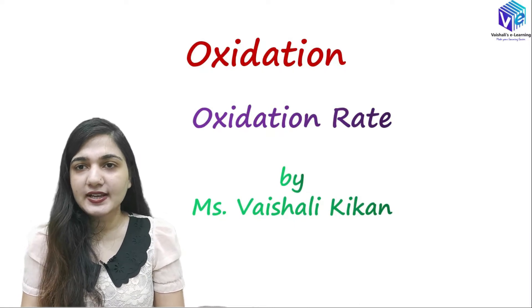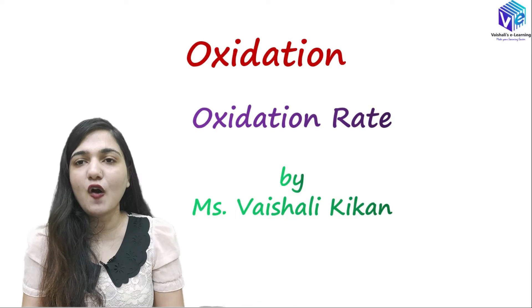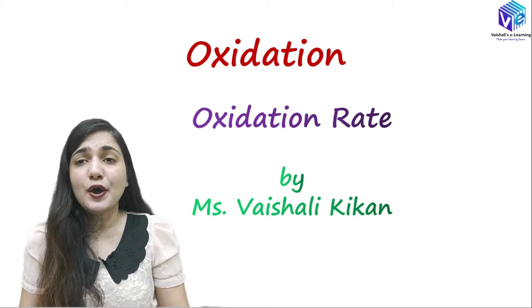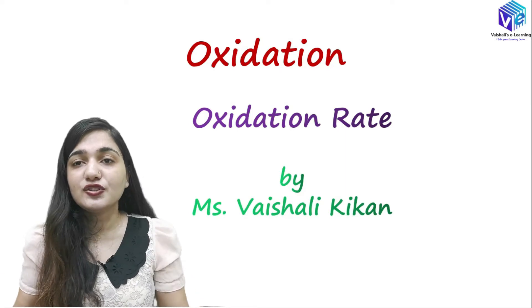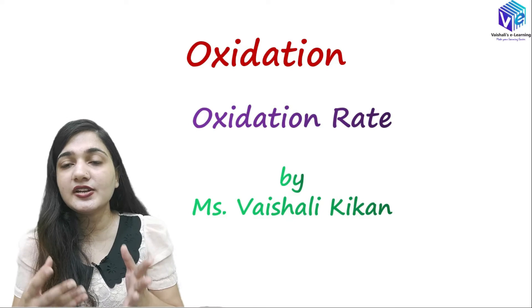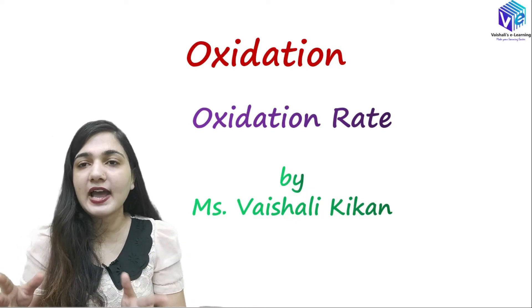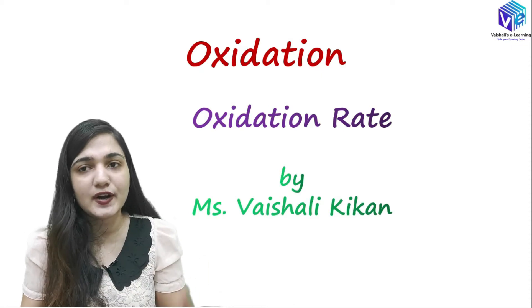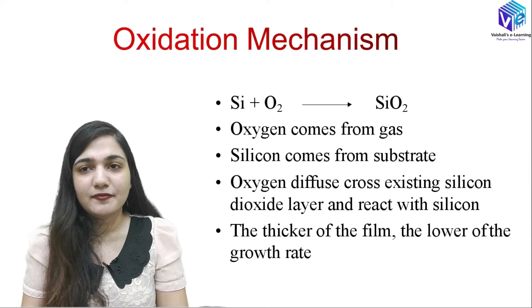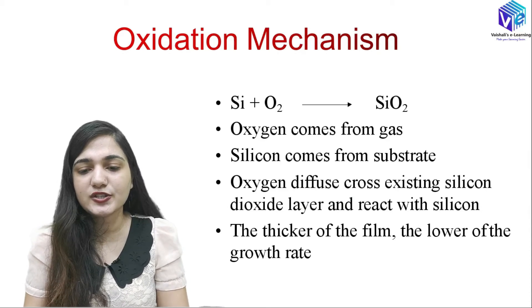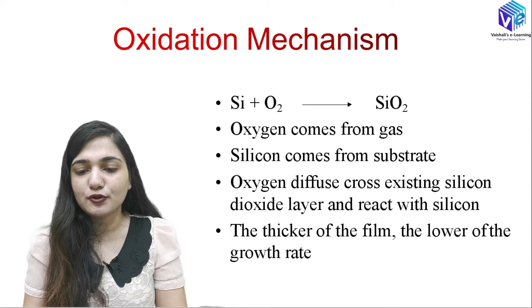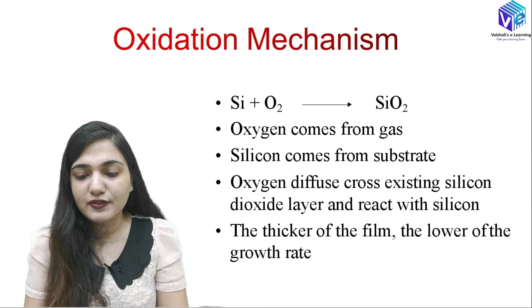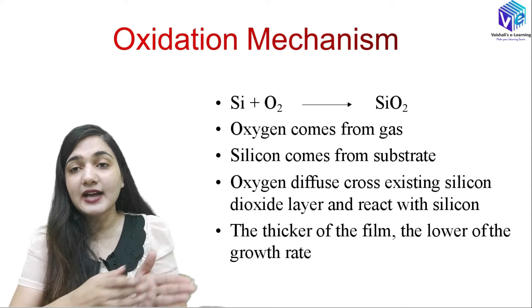Hello, I am Vishali Kikan and today in this session we are going to talk about the oxidation process. We are moving a step further and discussing the oxidation rate. We will be talking about the Deal and Grove model, where you can see how the oxidation rate depends upon time. We will also discuss some other parameters which control the oxidation rate. First, a quick revision: oxidation is a simple process where silicon reacts with oxygen to form SiO2. Oxygen comes from the gas phase and reacts with silicon from the substrate.